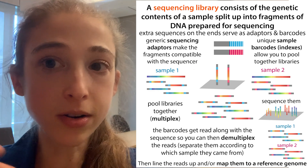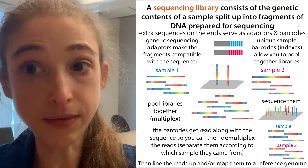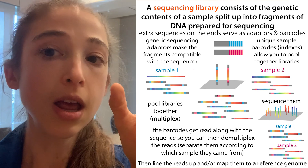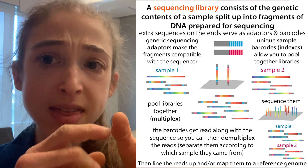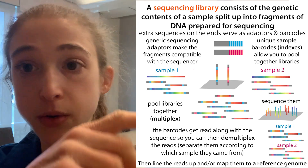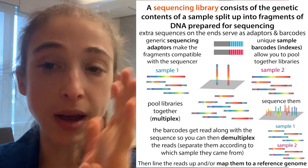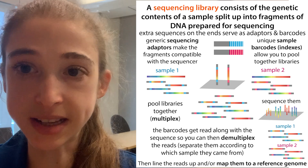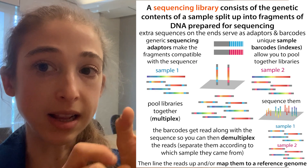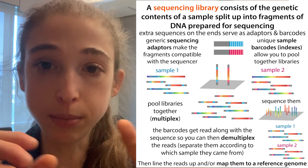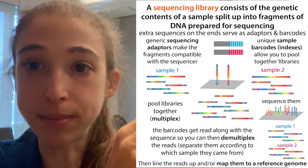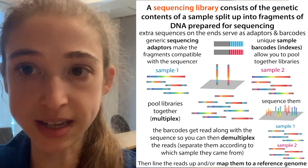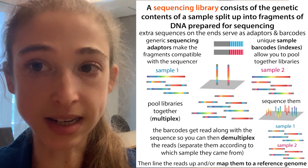The barcoding in this library is going to be very, very helpful. When we're talking about the library, we're typically talking about those smaller pieces that have the adapters on them — that's going to allow them to bind to the sequencer, make lots of copies, and get sequenced. That library is that collection of pre-processed pieces that have those adapters and barcodes, everything that makes them ready for the sequencer. That is a sequencing library.